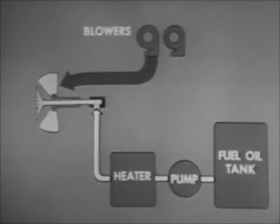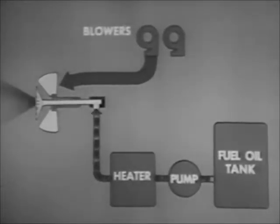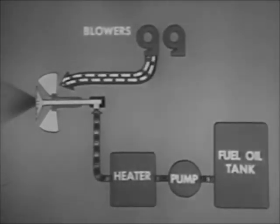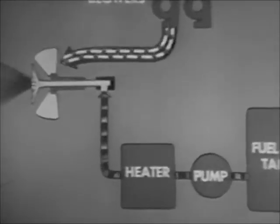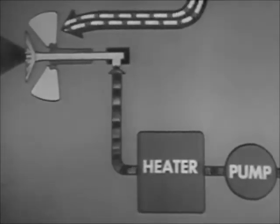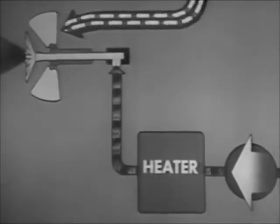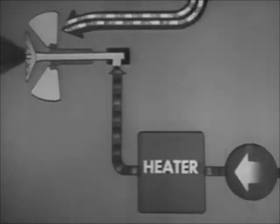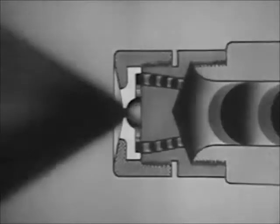You control the firing rate of the burner by varying the amount of fuel oil flowing through the burner. Of course, you must make corresponding changes in the amount of air reaching the burner when you change the amount of fuel oil. When you increase the pump pressure on the fuel oil line, you increase the quantity of oil going through the burner. When you decrease the pressure, you decrease the quantity of oil.